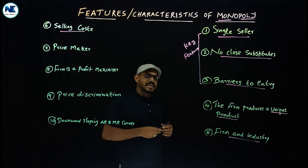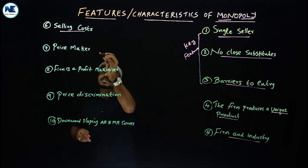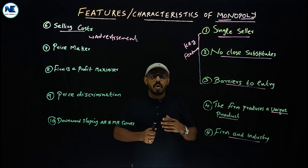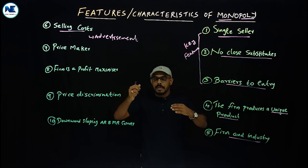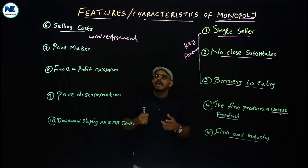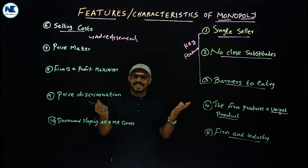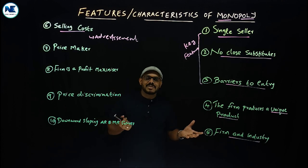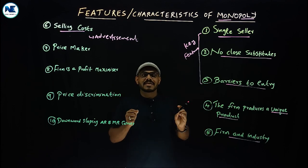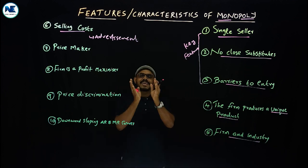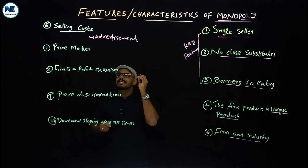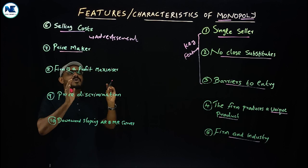The sixth feature is no selling cost. Selling cost includes advertisement, sales promotion activities, and door-to-door delivery — advertisement being the major part. But under monopoly, there is no competition. There is only a single seller and the product is unique, so there is no need to spend on selling cost like advertisement. The single firm is equal to the industry, so no selling cost is required.